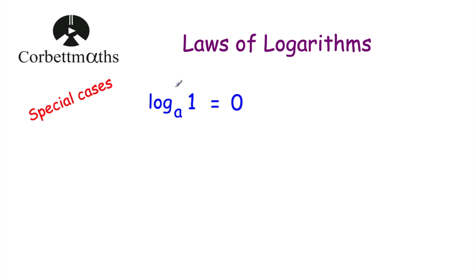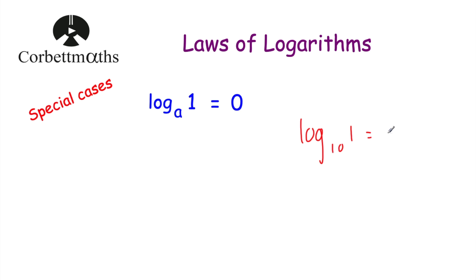Let's look at our next special case: log base a of 1 is equal to 0. If we've got a base of a, what power would you raise it to to get 1? Well that would be 0, because a to the power of 0 is equal to 1. Likewise, if we had log base 10 of 1, we'd be saying what power do we raise 10 by to get 1? That's going to be to the power of 0, so that would equal 0. So if you've taken the log of 1, that's always going to be equal to 0.